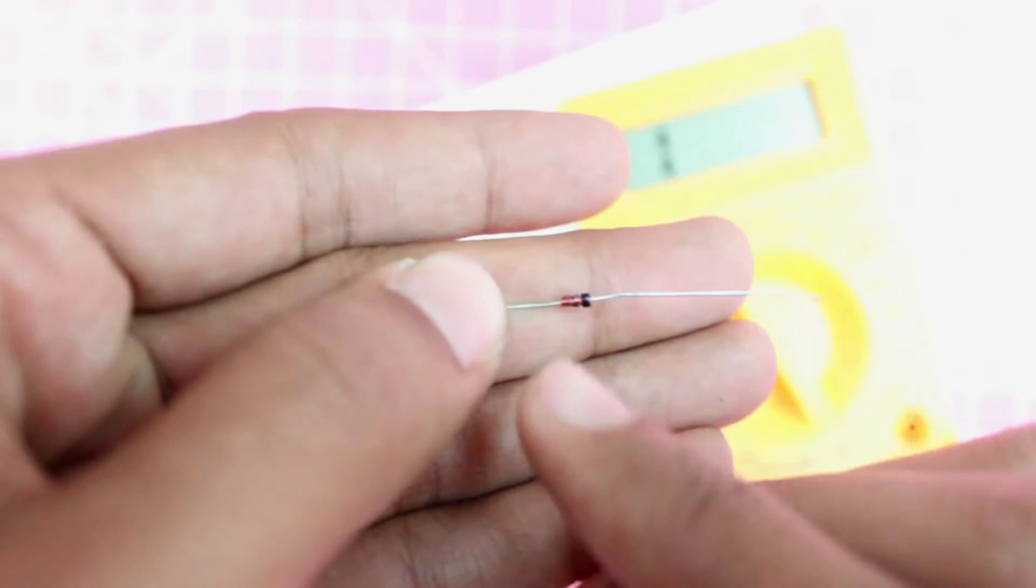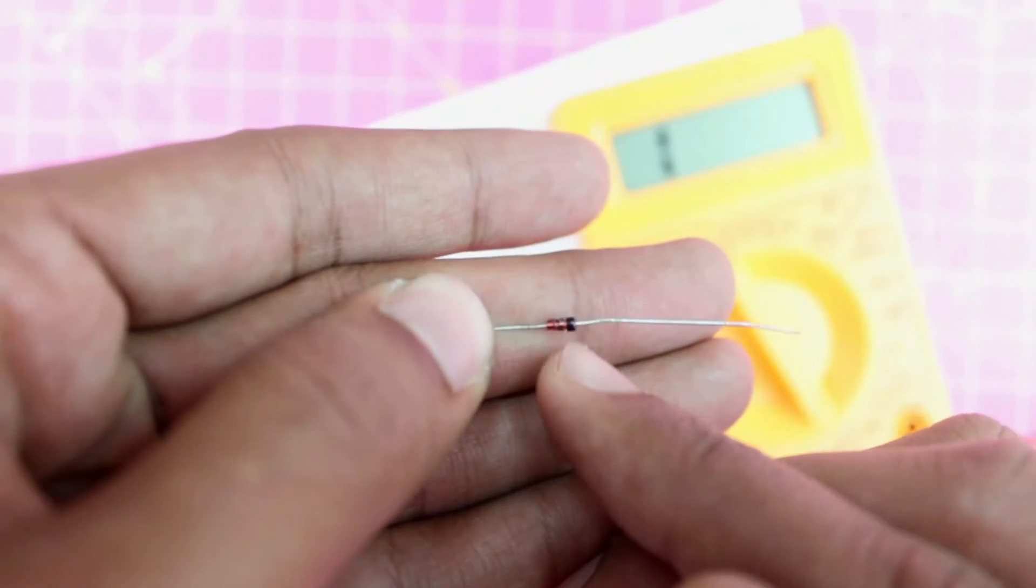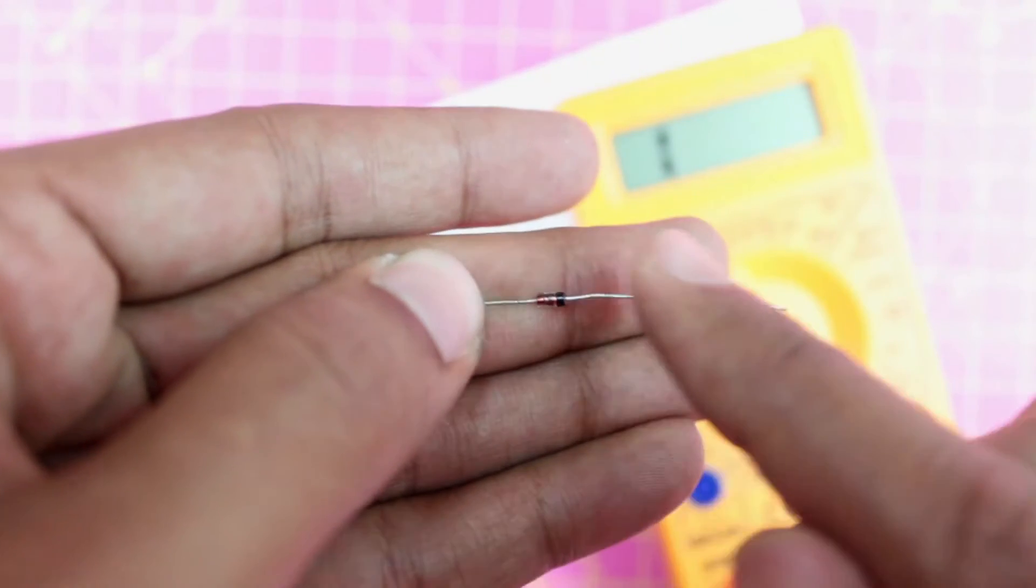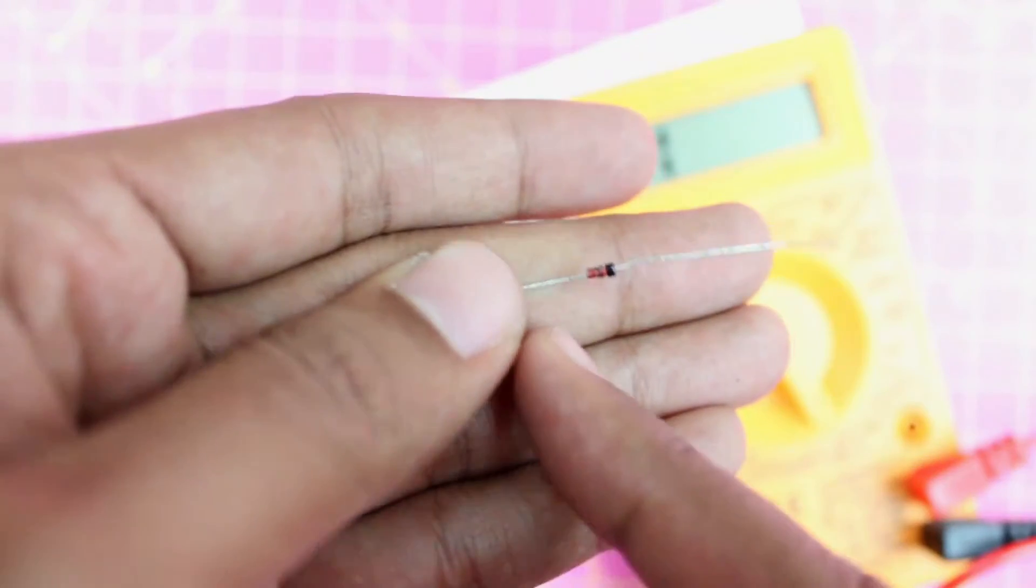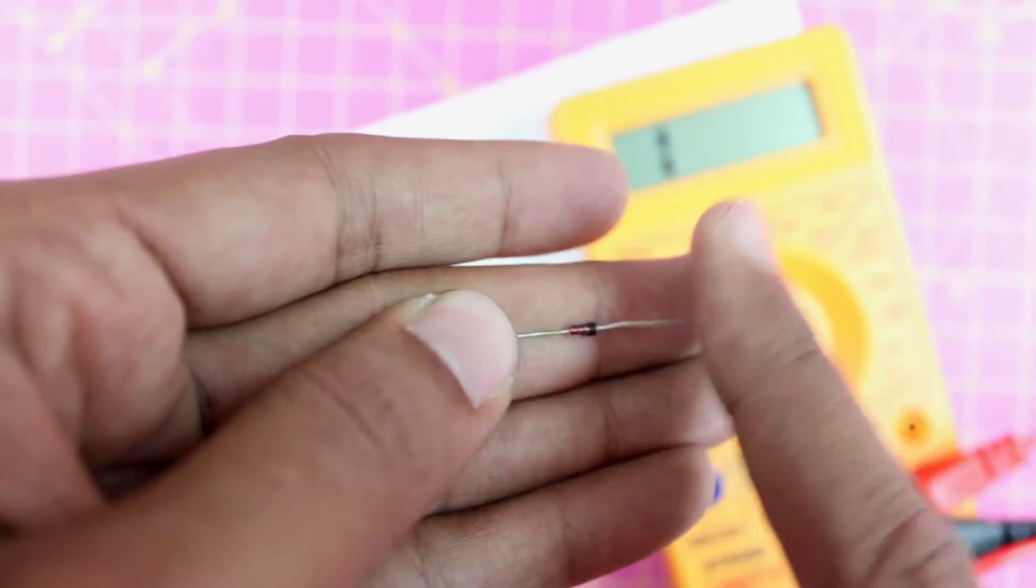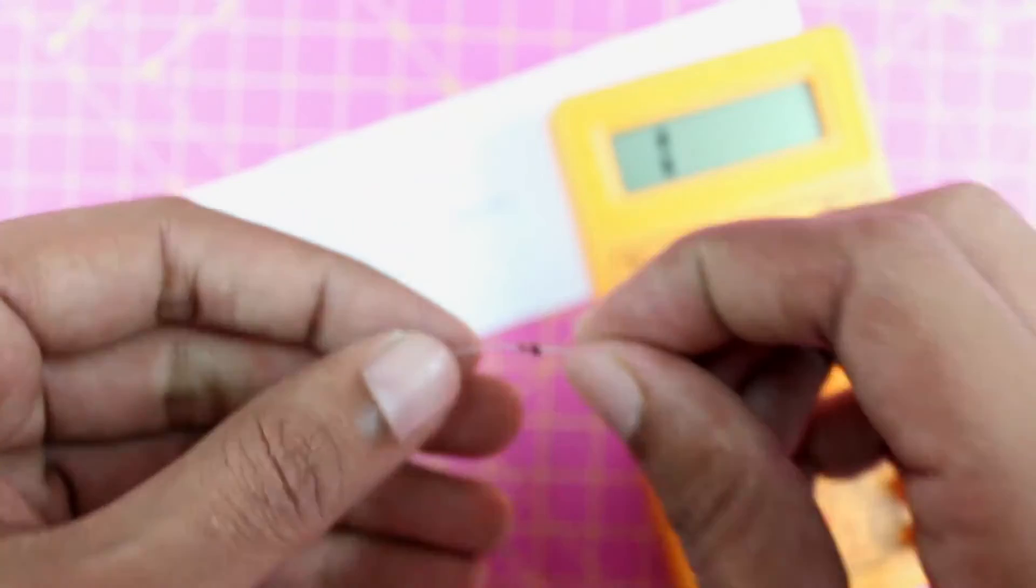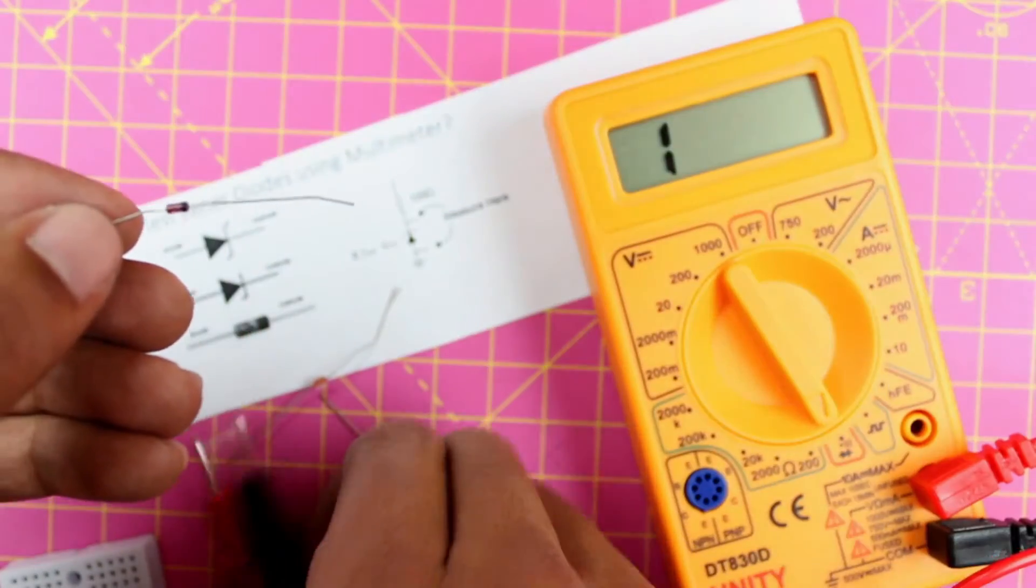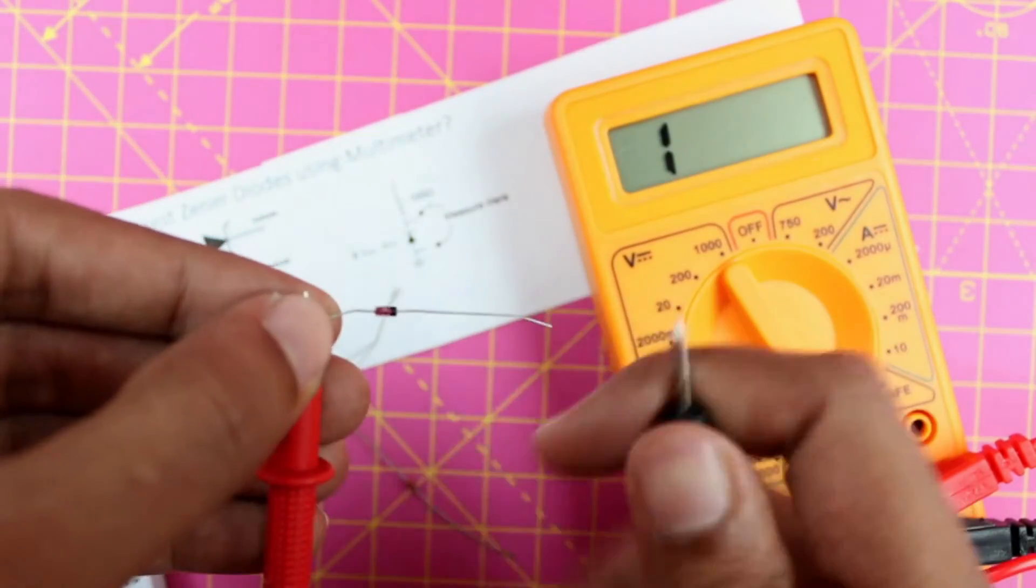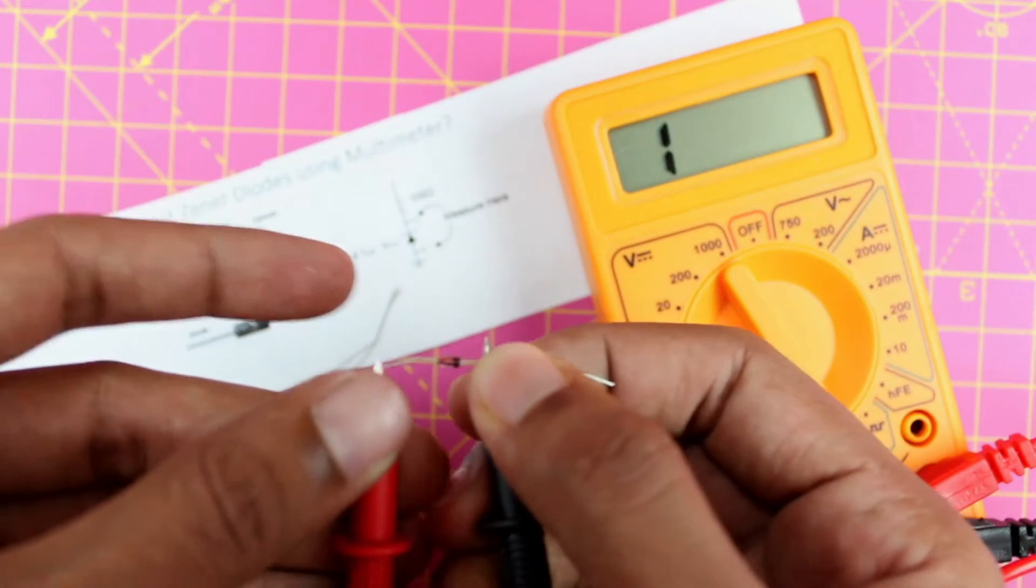Then you can take your zener diode and just like your regular diode you will find a stripe. You can see a black stripe here. The pin with the stripe is the cathode and the other pin is your anode. Now we know that this is your cathode and this is your anode. Once you know that, take the black probe of your multimeter and keep it in the cathode and the red probe should be kept in the anode.